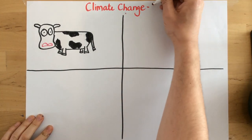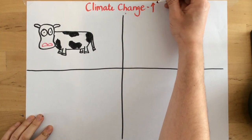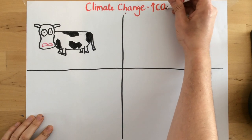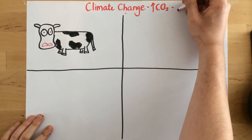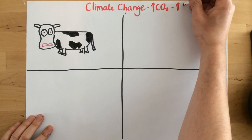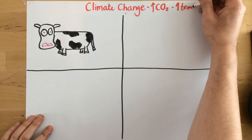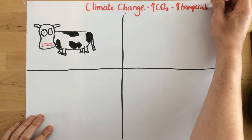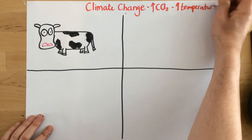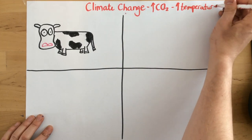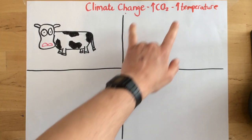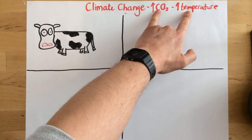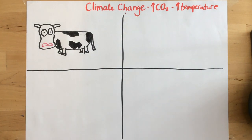Climate change is essentially being caused by an increase in atmospheric carbon dioxide levels, and that in turn is leading to an increase in global temperatures due to that greenhouse gas, carbon dioxide, absorbing infrared radiation from the sun. If you want to learn more about this process, please look at the video called The Greenhouse Effect.